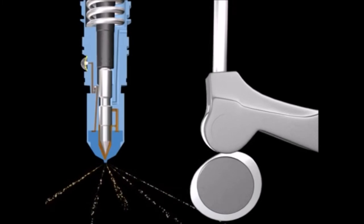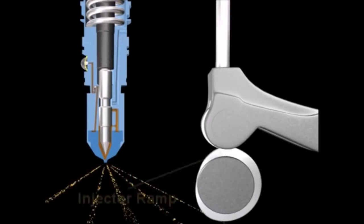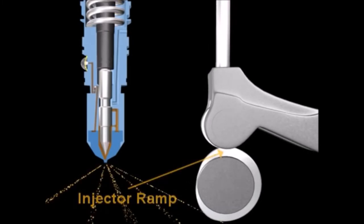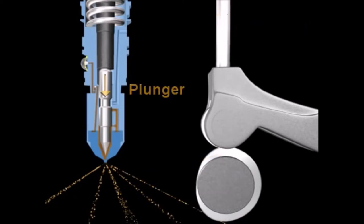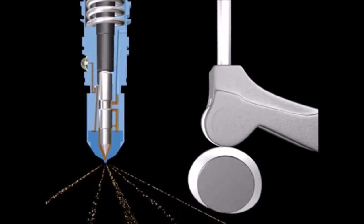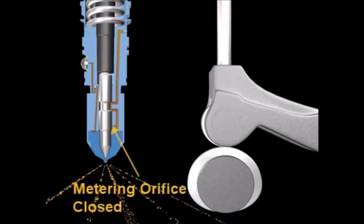With continued camshaft rotation, the cam roller travels up the injector ramp and the upward movement of the push rod pushes the injector plunger downward. As the injector plunger moves downward, it closes off the metering orifice, completing the metering cycle.